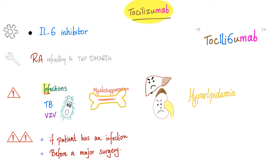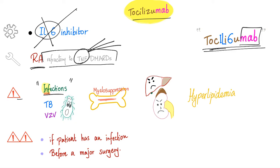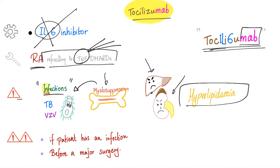The next one is tocilizumab. Tocilizumab is an anti-interleukin-6 (IL-6) inhibitor — a monoclonal antibody against IL-6. Here's a mnemonic: interleukin-6-mab. It is used for rheumatoid arthritis refractory to TNF-DMARDs such as infliximab, adalimumab, and etanercept. Side effects include infections, myelosuppression (leading to further infections), nephrotoxicity or hepatotoxicity, and hyperlipidemia. Contraindications are the same — active infection.